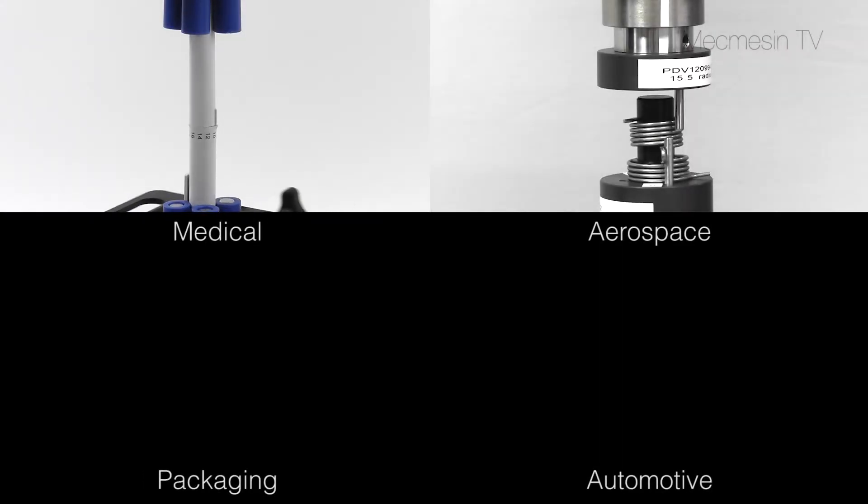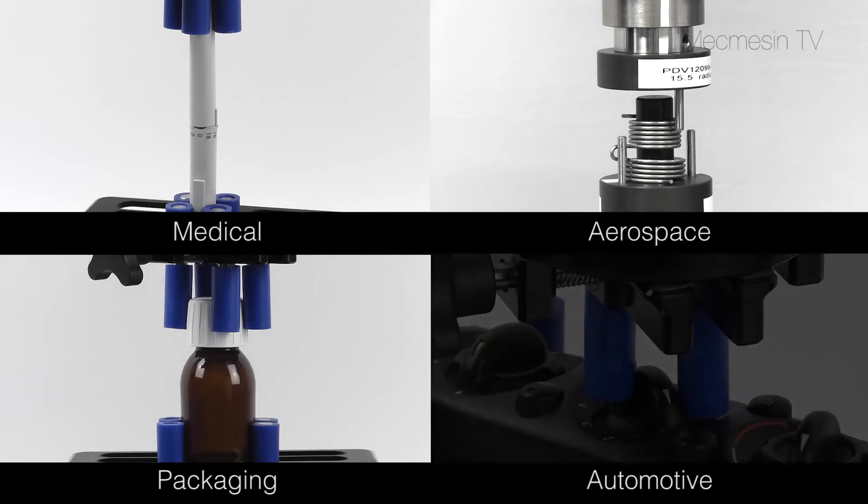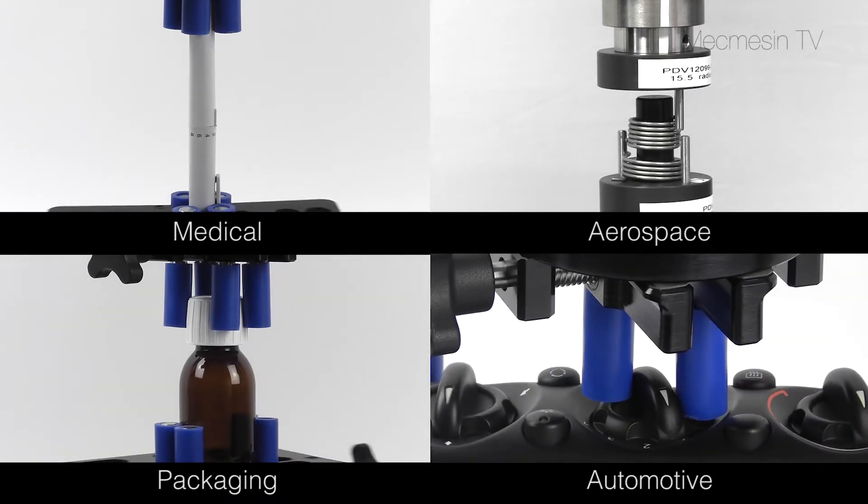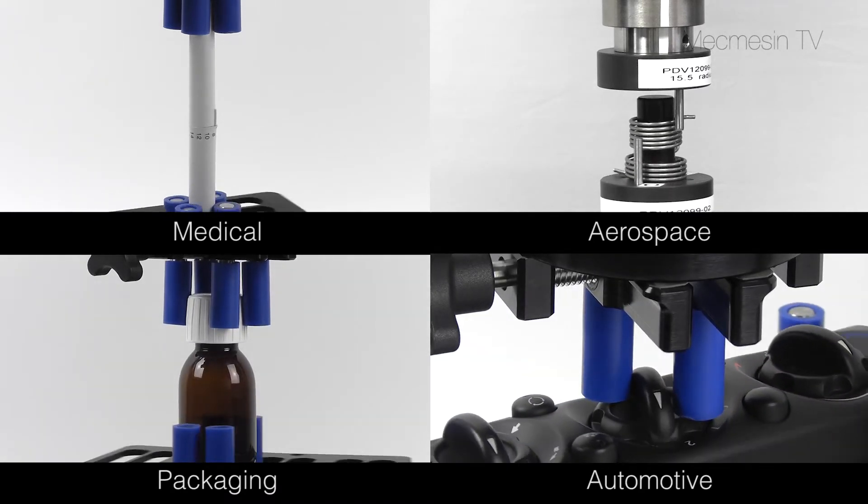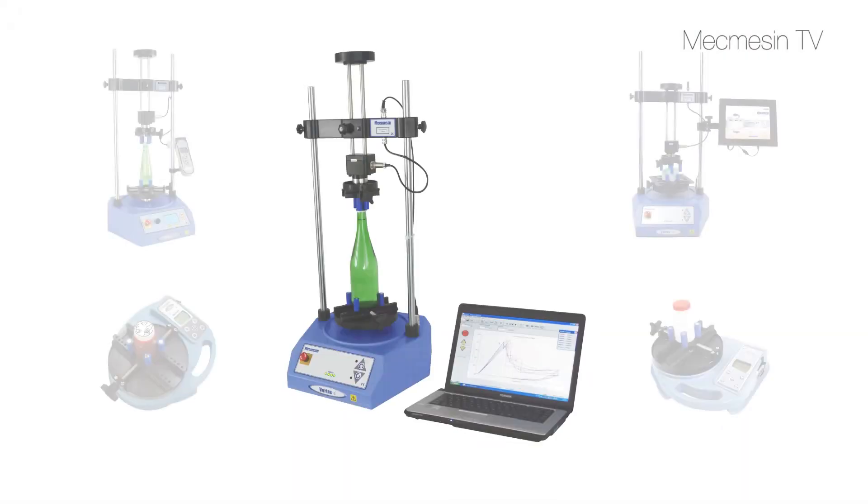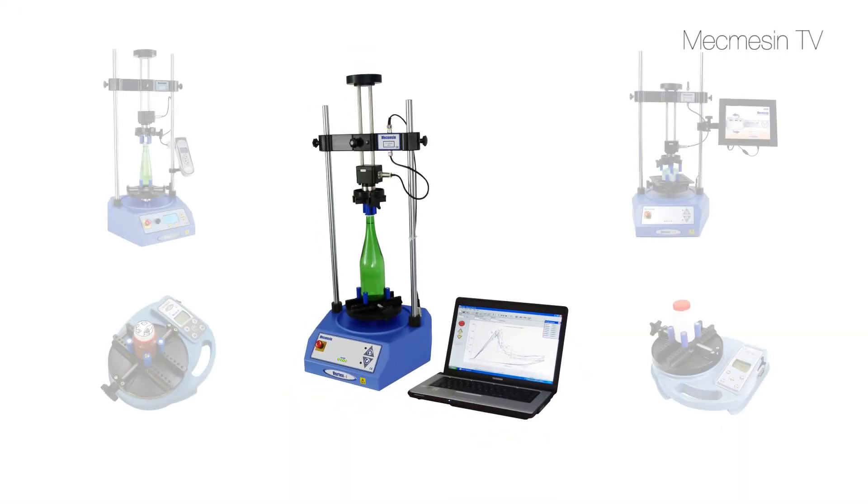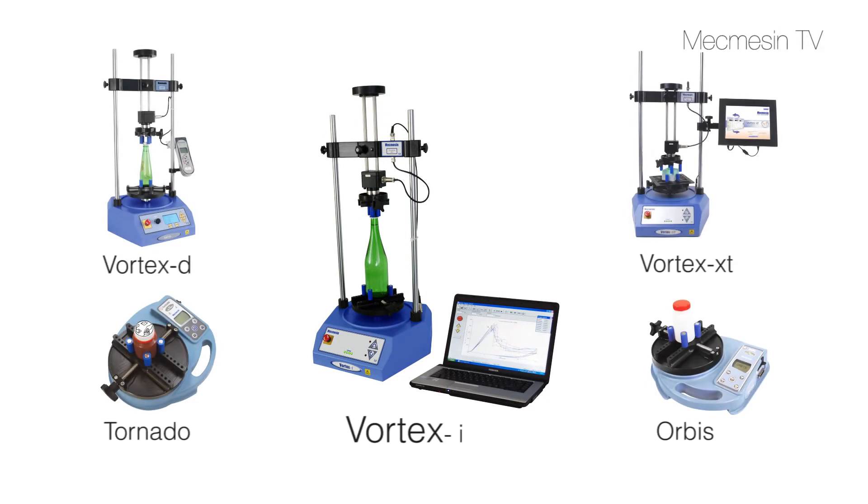The Vortex-i finds applications in all industries, from testing an insulin pen to checking an automotive rotary switch. It's just one of the Mecmesin family of torque-measuring instruments which include hand-operated digital torque testers and console-controlled systems.